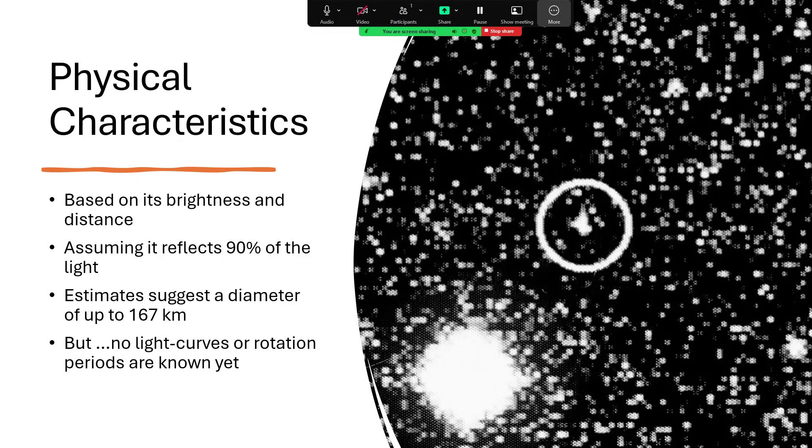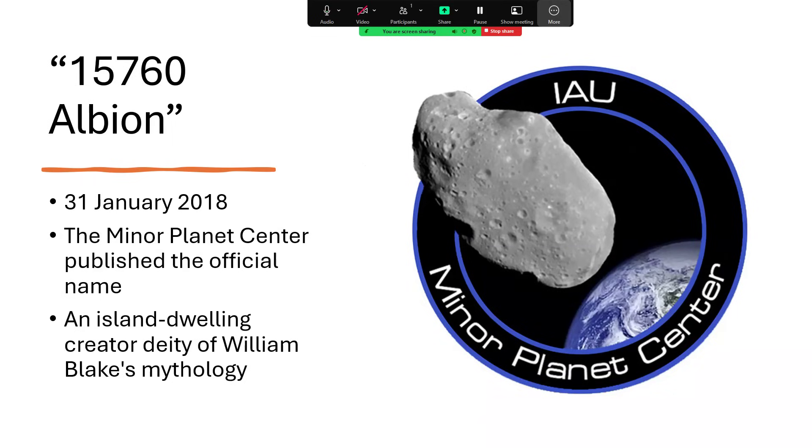Of this little interesting Kuiper Belt object, the first Kuiper Belt object after Pluto to be discovered, 1992 QB1, now given a formal name, 15760 Albion, named after an island-dwelling creator deity from William Blake's mythology. This was published finally in 2018 by the Minor Planet Center, giving us a formal name for this object.